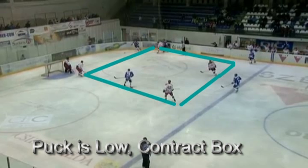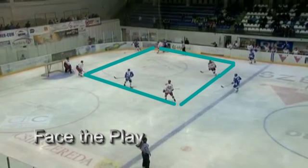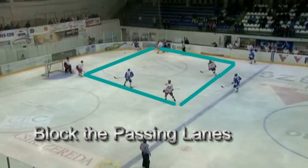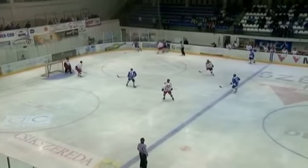If the puck is low, you should contract the box. If the puck is high, you should expand the box. You should always face the play, and you should block the passing lanes at all times. Let's go to the clip.